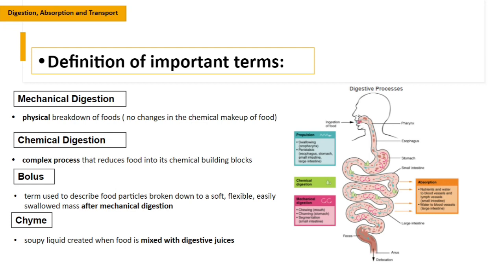First, let's define important terminologies. Mechanical digestion is the physical breakdown of food — there are no changes in the chemical makeup of the food. So when we say mechanical digestion, only the physical properties of the food change, but the chemical composition remains the same.